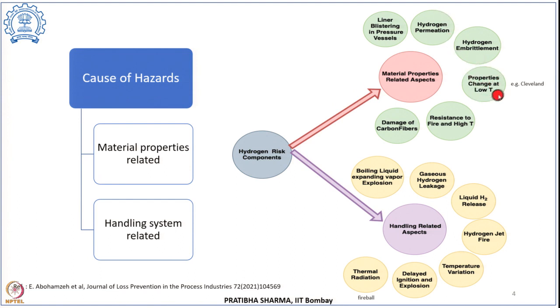Another material property related hazard is the change in properties at low or cryogenic temperatures. When materials such as containment vessels or pipelines are subjected to liquid hydrogen or low-temperature hydrogen, there is a change in their mechanical properties. At low temperatures, there could be a change from ductile to brittle behavior, unexpected plastic deformations, or a phase transformation resulting in a change in the elastic and mechanical properties. There could also be thermal contraction of the materials, which varies from material to material.